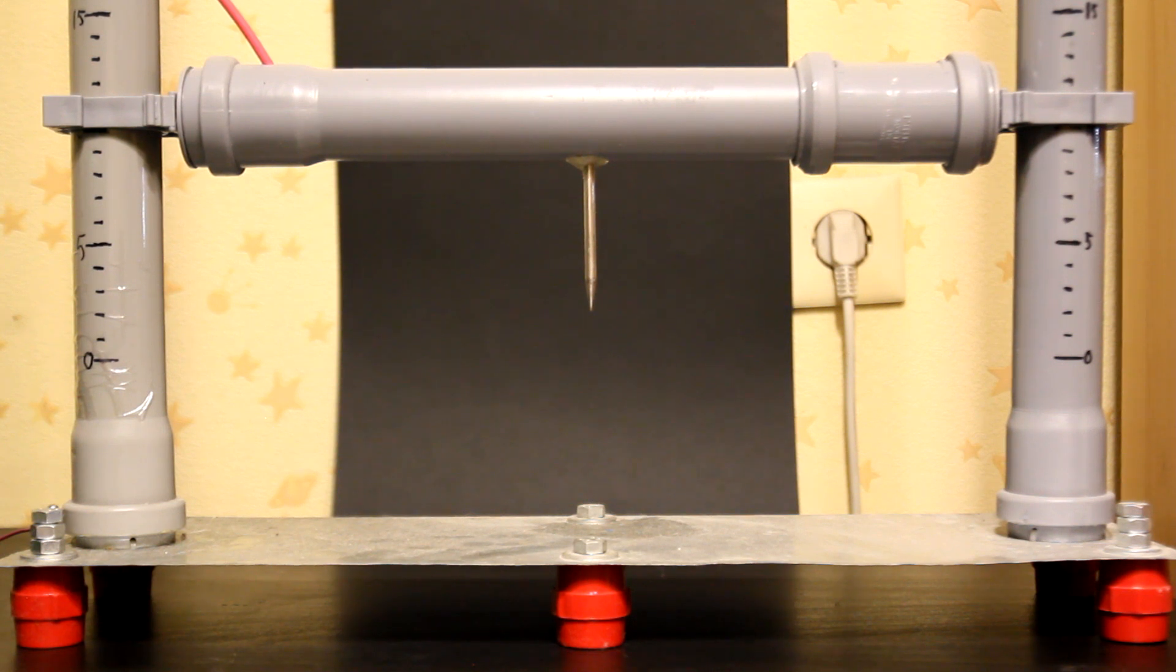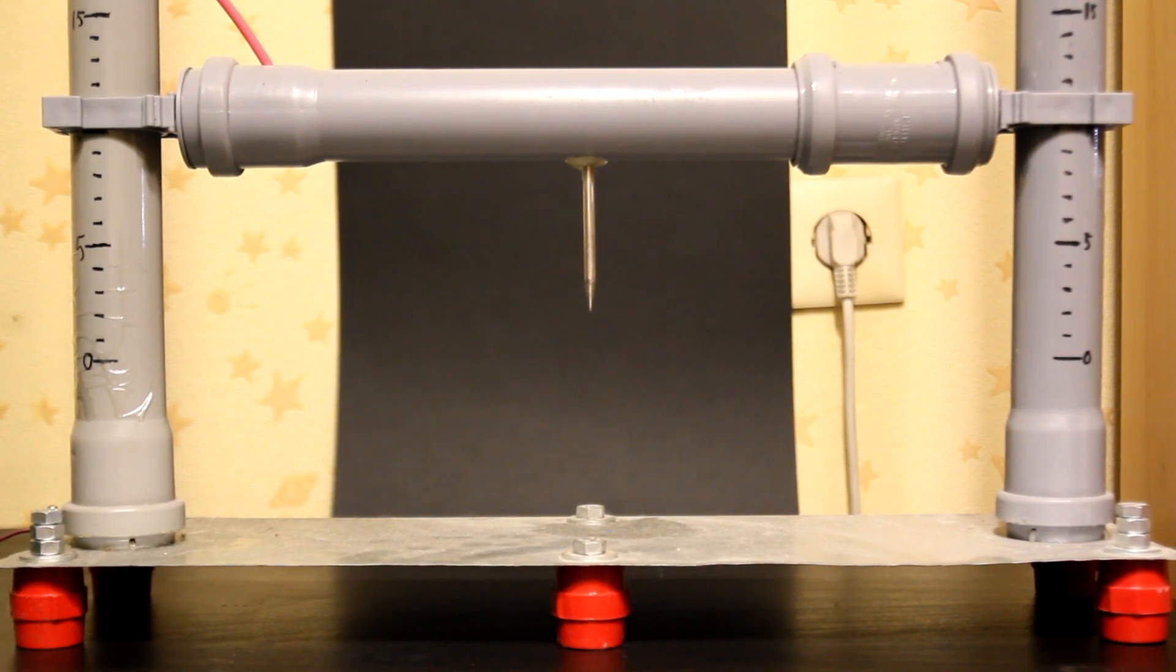This is actually the easiest air gap to break down with high voltage. I also have a black piece of cardboard in the back so you could see corona and sparks better. We'll start with small air gaps, 10 centimeters, and will gradually go higher up to 30 centimeters.